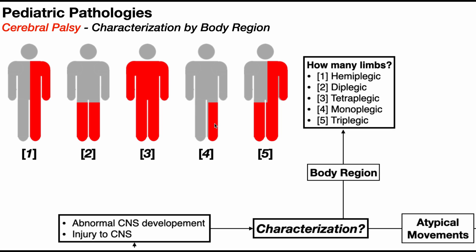You can also have monoplegic CP, where one limb is affected — most commonly one of the legs. Even rarer than that would be triplegic CP, where usually both legs and one arm are affected. Again, why this variation occurs depends on which parts of the brain are affected.